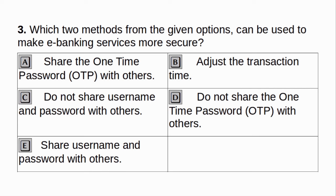Which two methods from the given options can be used to make e-banking services more secure? A. Share the one time password OTP with others. B. Adjust the transaction time. C. Do not share username and password with others. D. Do not share the one time password OTP with others. E. Share username and password with others. Answer: C and D.